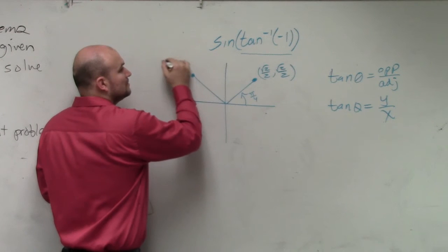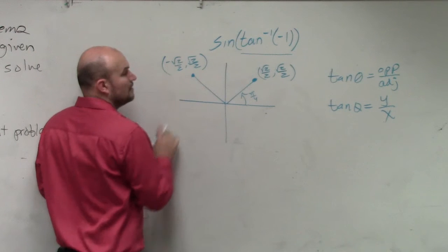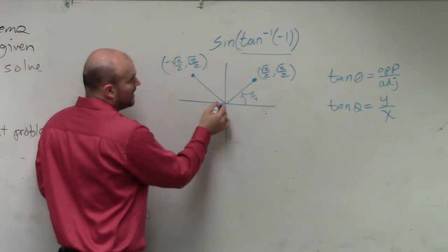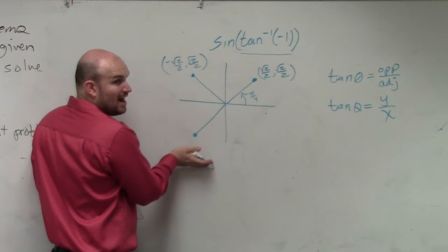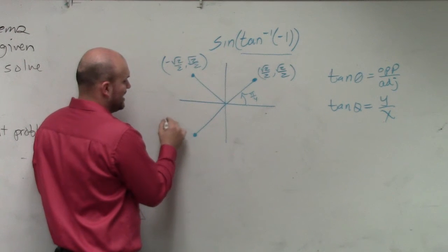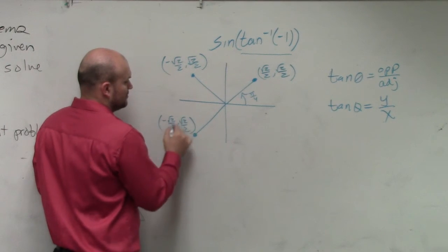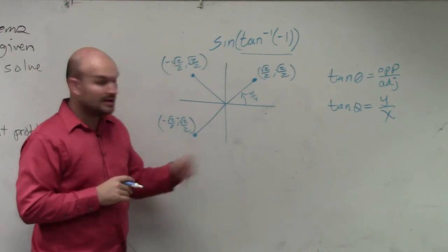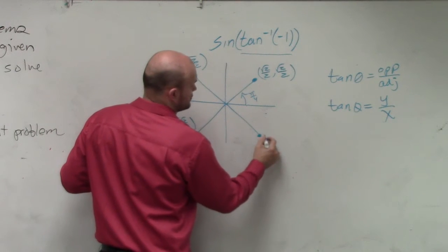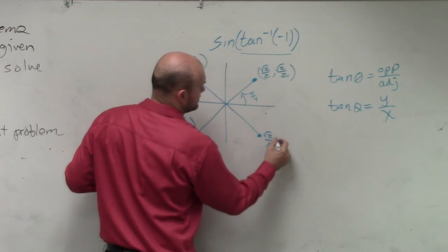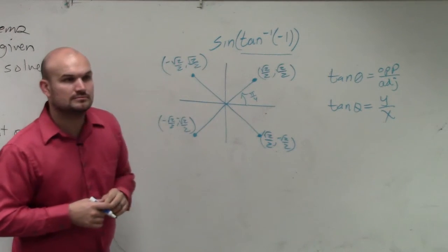If we flip this over the y-axis, what does this produce now? Negative square root of 2 over 2 comma square root of 2 over 2. Over here, if we flip it now over the x-axis as well, now we have negative square root of 2 over 2 comma negative square root of 2 over 2. Does everybody agree with me? And if we flipped it over here, then we'd have square root of 2 over 2 comma negative square root of 2 over 2.